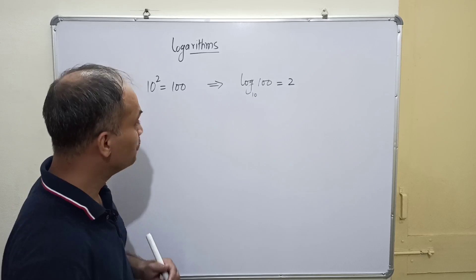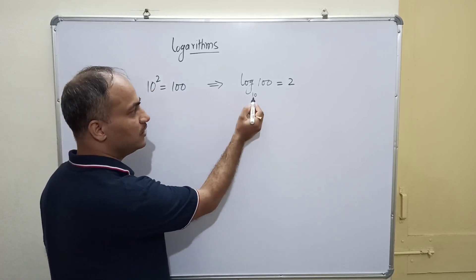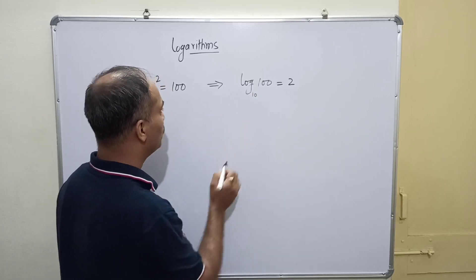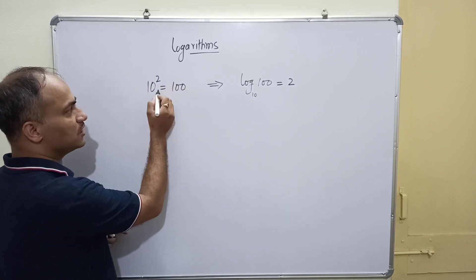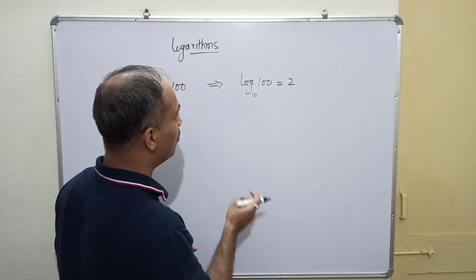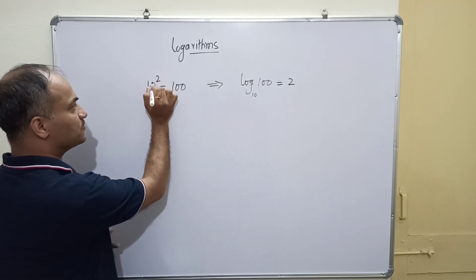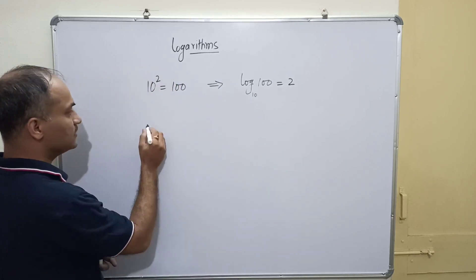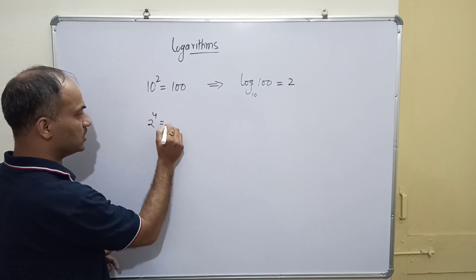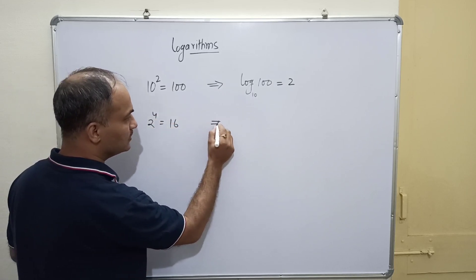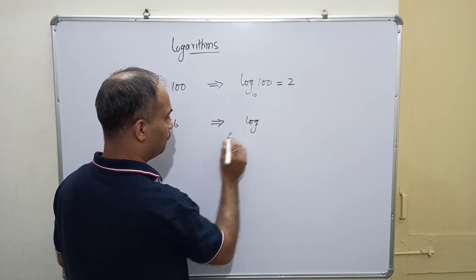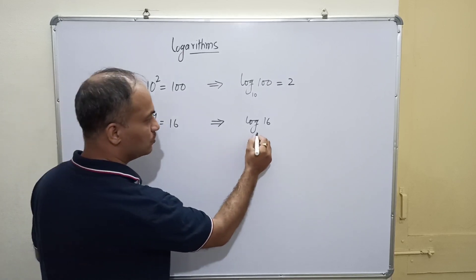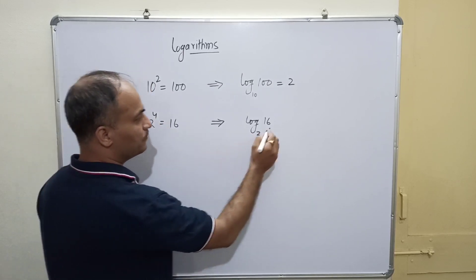Let us see what we have done: whatever is the base in the exponential form, that same base appears in the logarithm. The output quantity becomes the argument of the log, and the exponent becomes the value or answer of the logarithm. For example, 2 to the power 4 equals 16, so log base 2 of 16 equals 4.